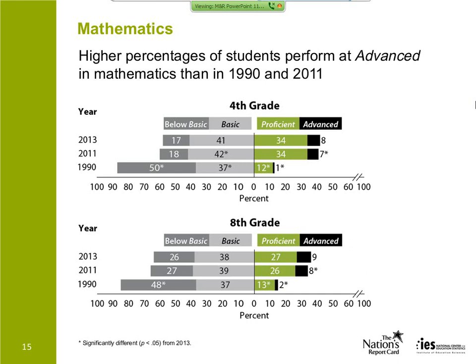Turning to achievement levels, both grades saw the percentage of students at advanced higher in 2013 than in either comparison year. At grade 4, eight percent were at advanced in 2013, statistically higher than seven percent in 2011 and one percent in 1990. At grade 8, there was a similar one-point increase from eight to nine percent between 2011 and 2013. The percentage of students below basic was lower in 2013 than in 1990, dropping from 50 percent to 17 percent over the long term at grade 4.